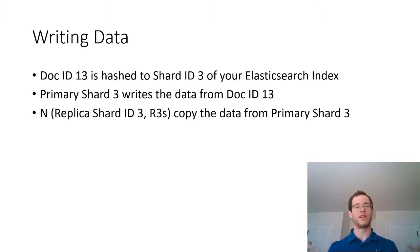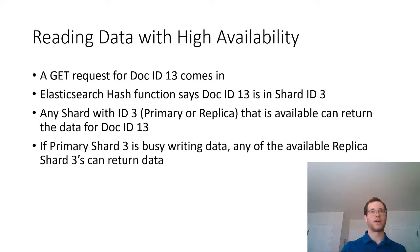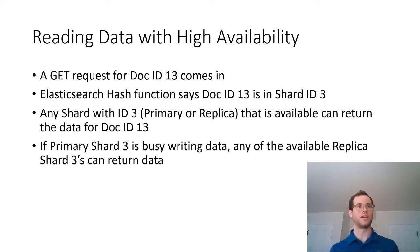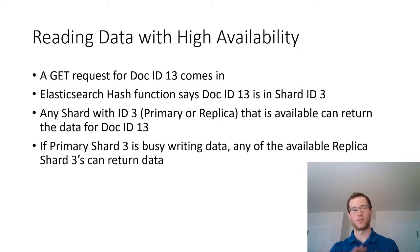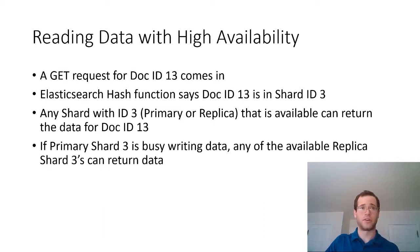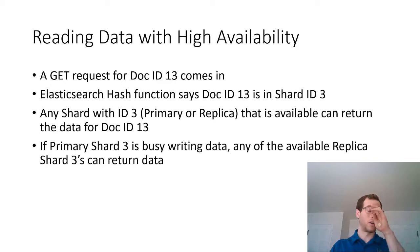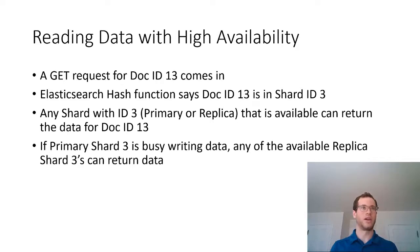That replication increases data availability so that if any read requests come in, you have high availability. When a GET request comes in for document ID 13, the hash function determines it lives on shard ID 3, and then any shard with that ID — whether primary or replica — that is available can return the data. This is very helpful: if primary shard 3 is busy because you're currently writing data, any of the other replica shards with ID 3 can fulfill that GET request, so any of those nodes could return the data for document ID 13.